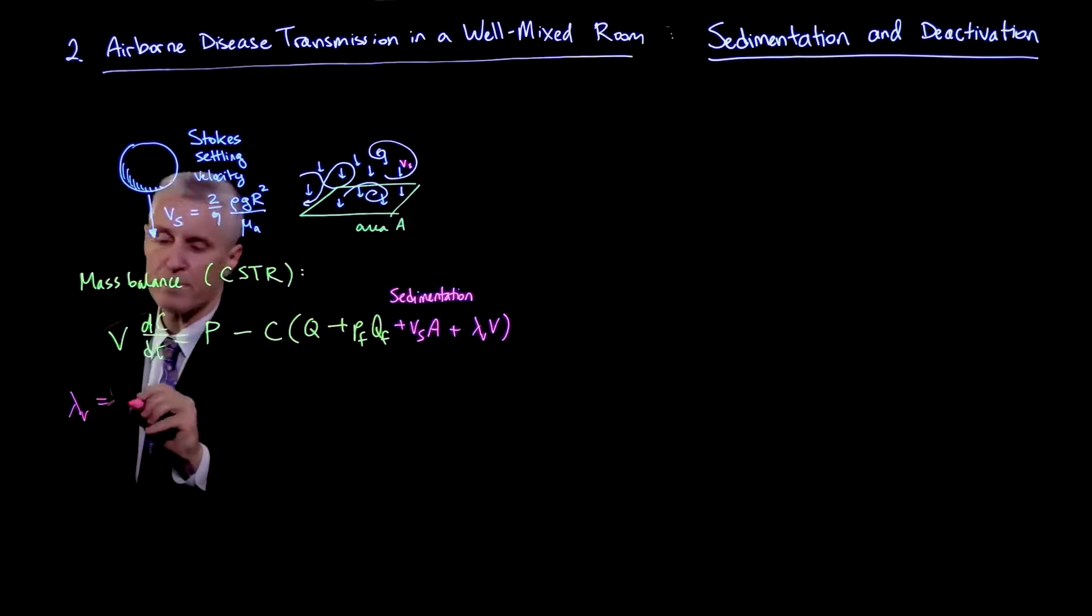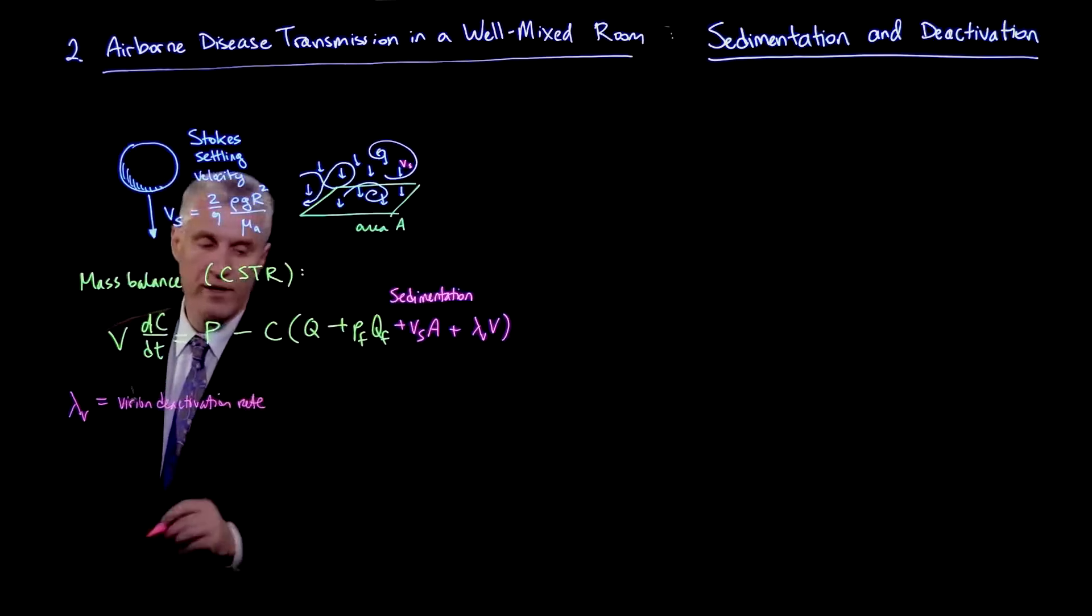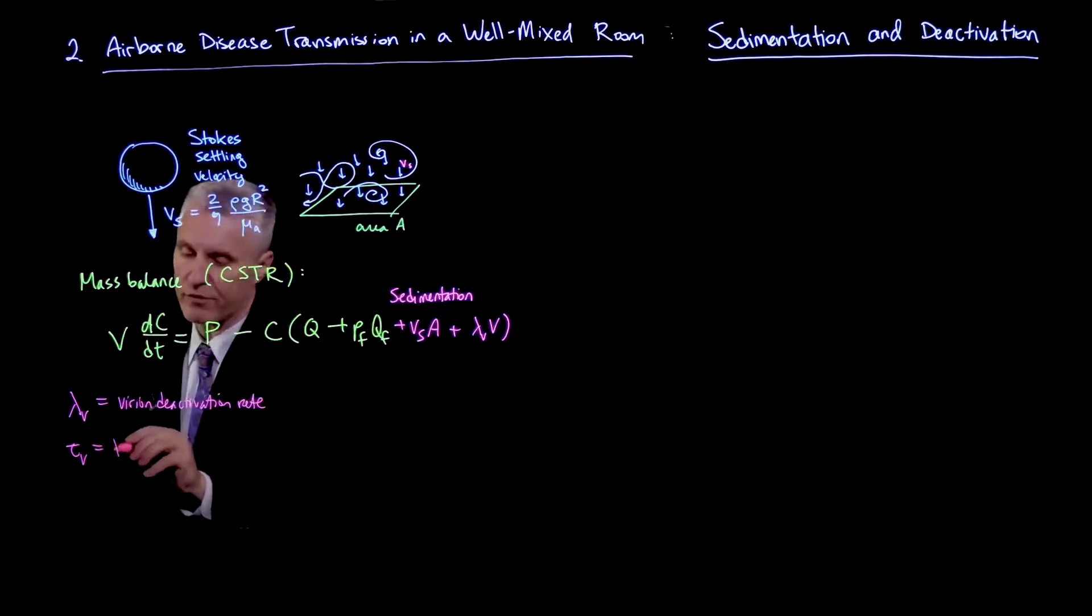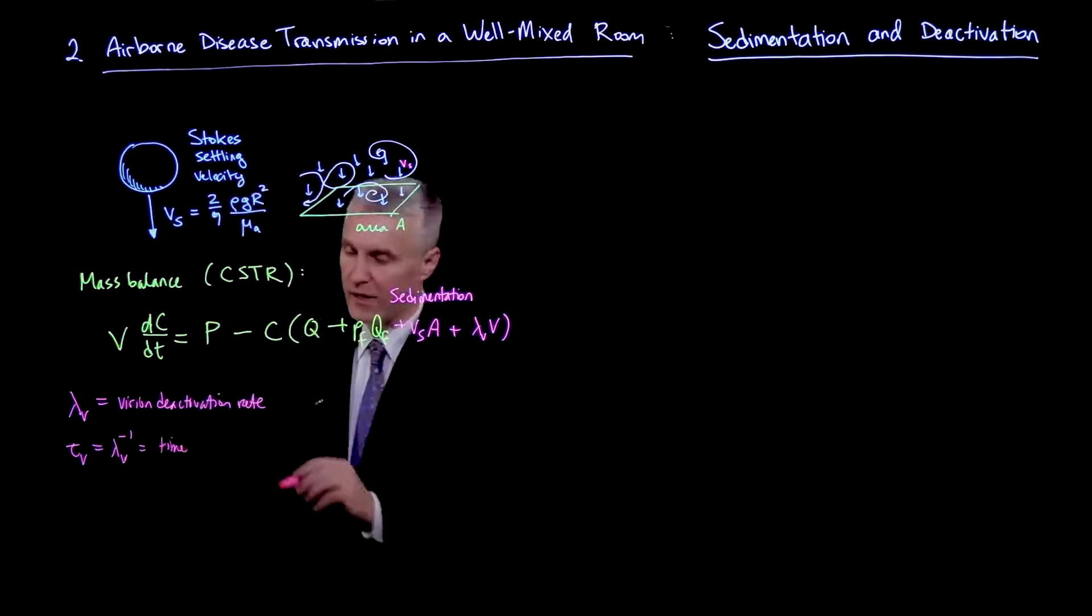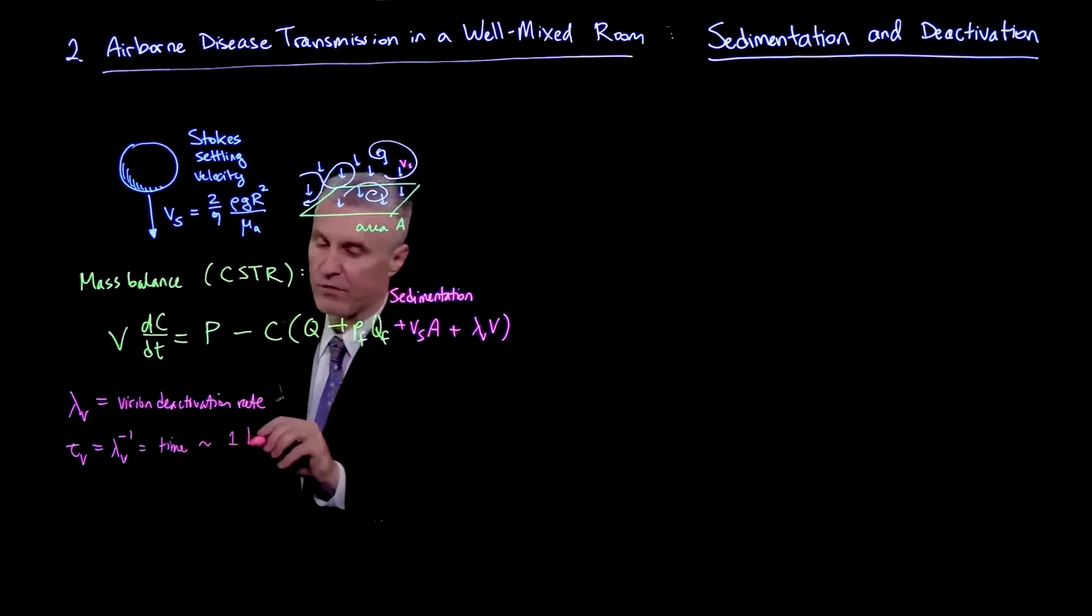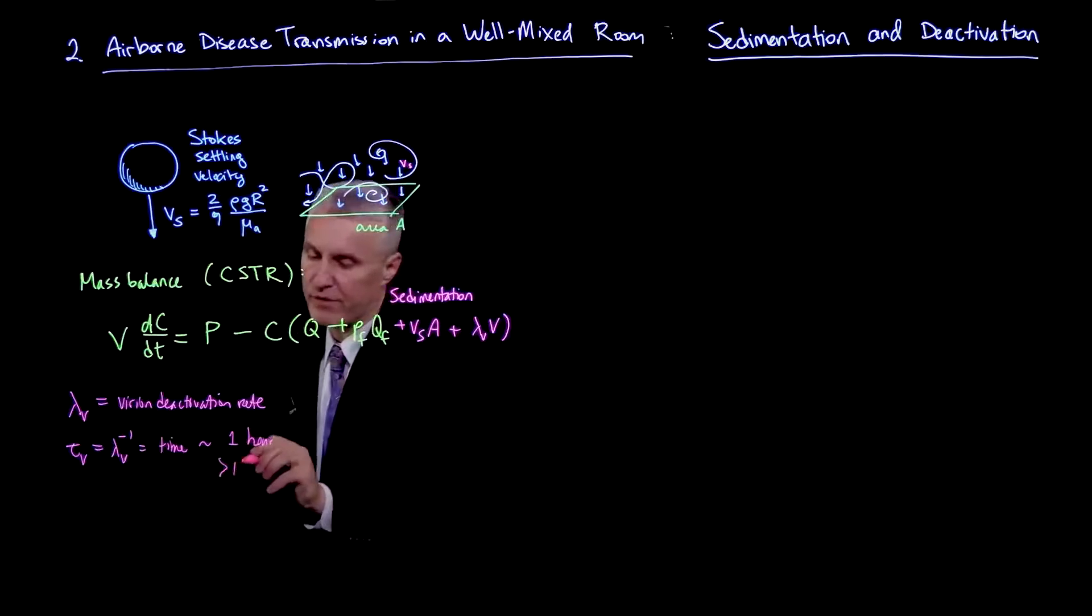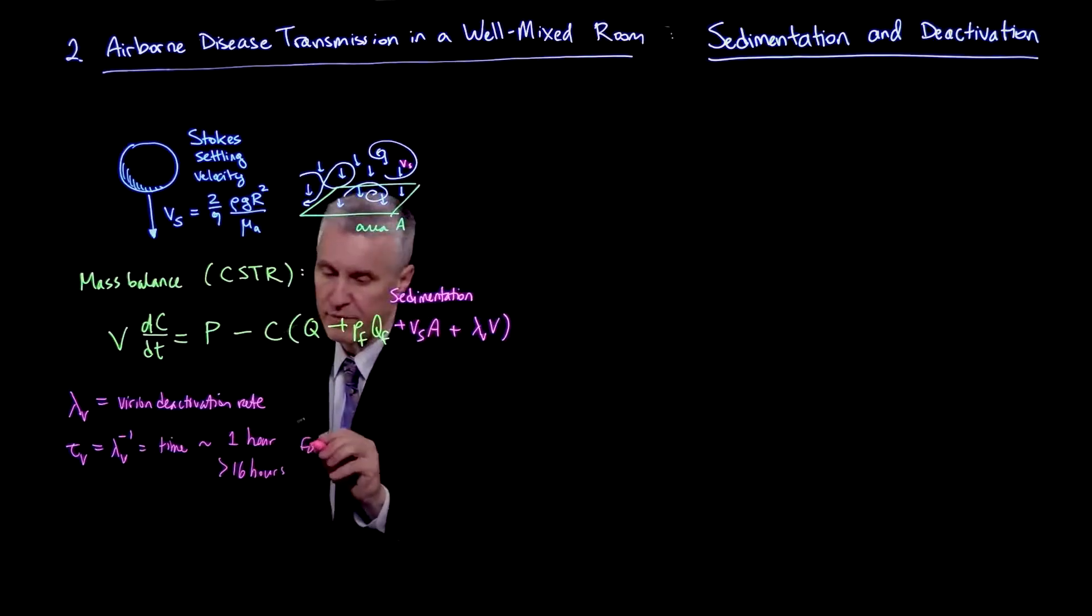So lambda_V is the virion deactivation rate. If we look at Tv, which is lambda_V inverse, this is the deactivation time. This thing has been measured to be of order one hour in some studies, but also even greater than 16 hours in aerosol form in other studies for SARS-CoV-2. So it could be potentially long.